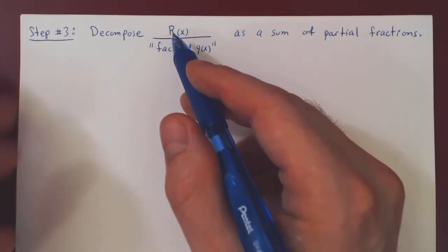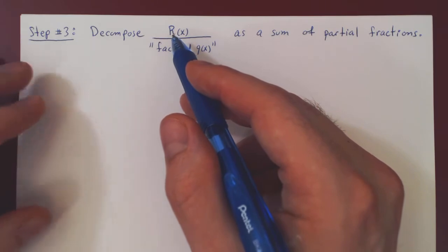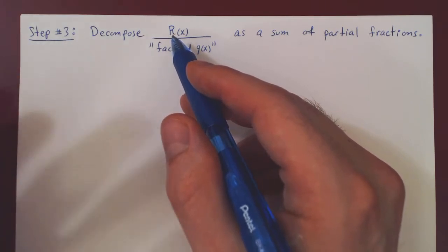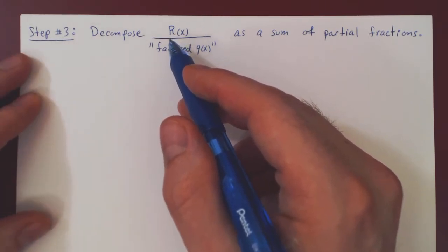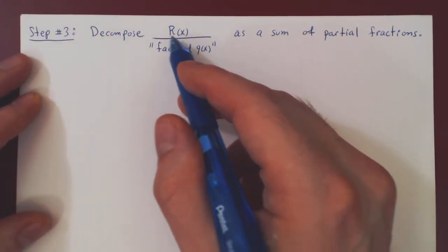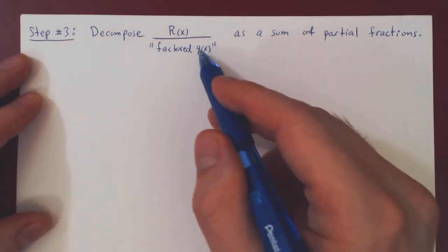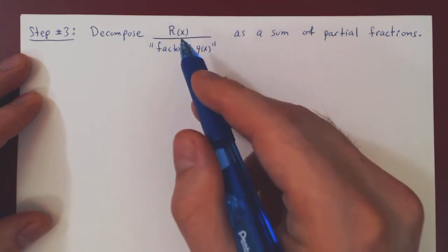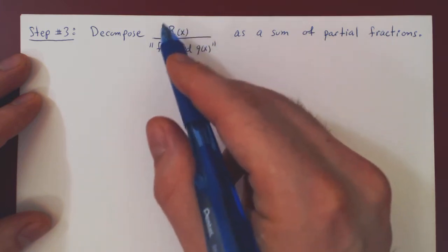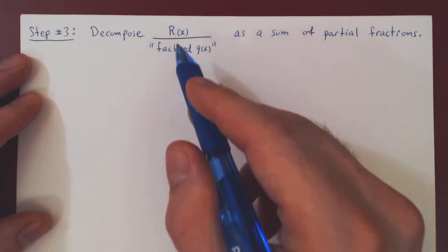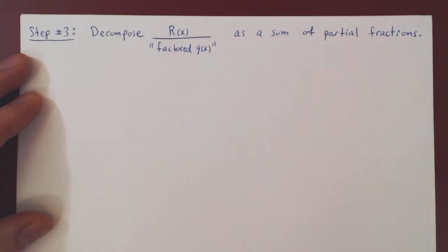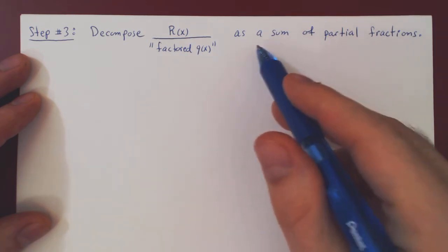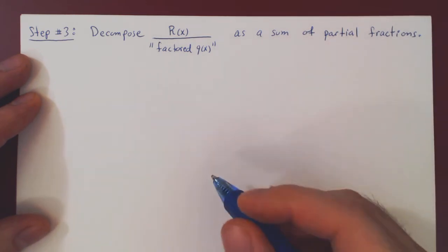You will see that the decomposition — first the form — only depends on the factored form of Q of x and not on R of x. R of x will have an impact in finding what we'll see are the coefficients of our decomposition.